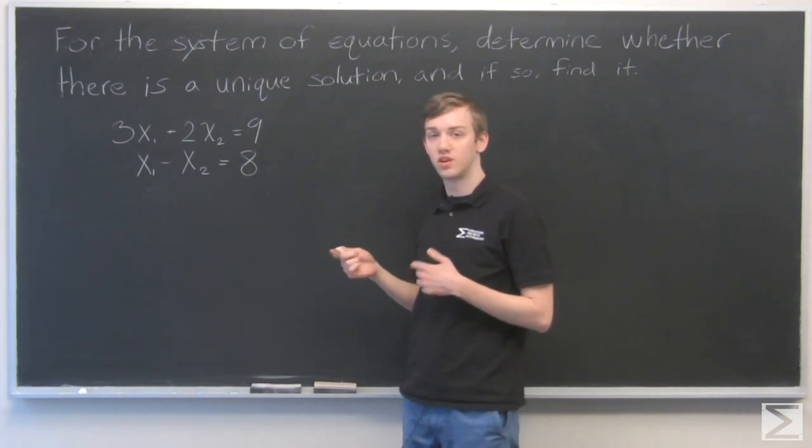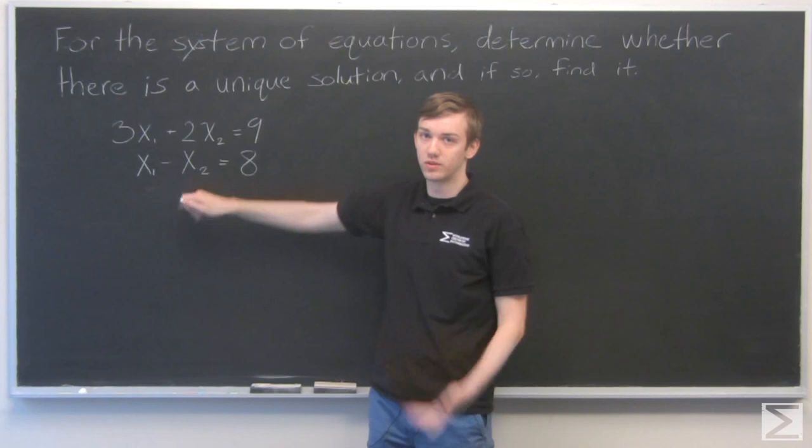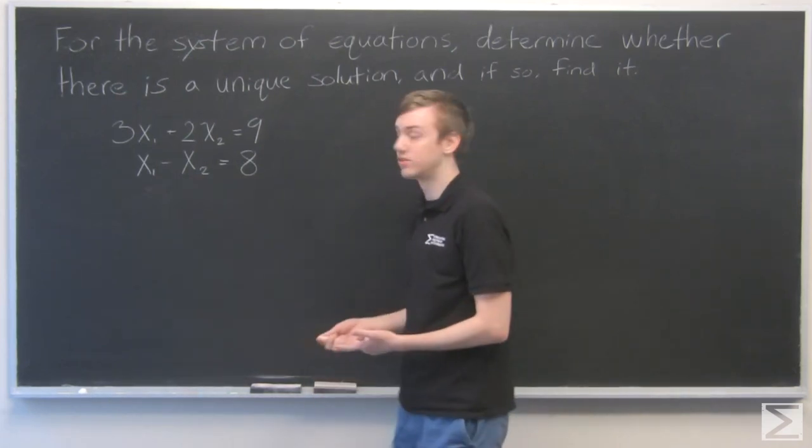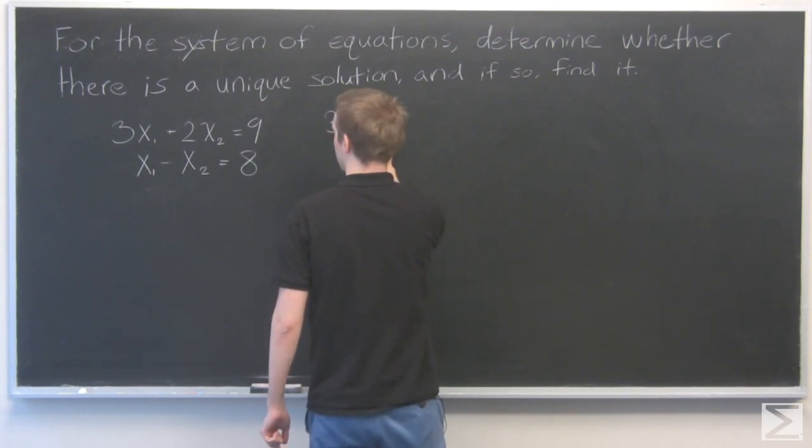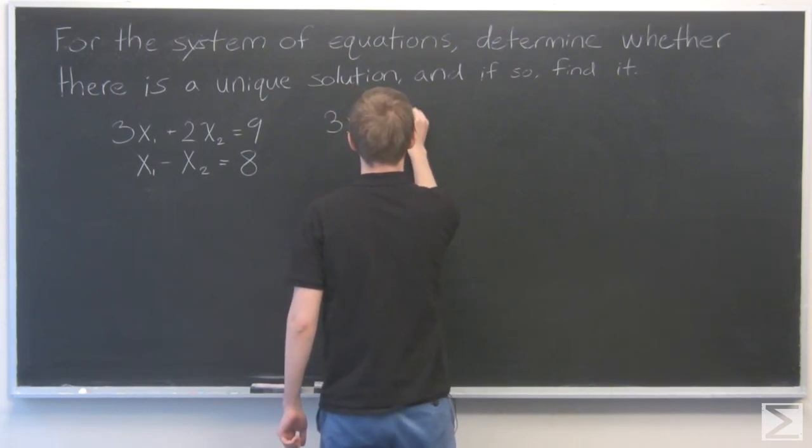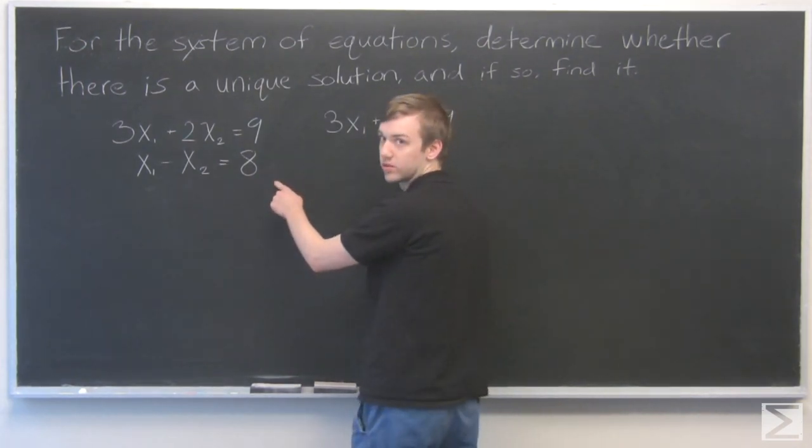So I can take the second equation and multiply it by 2. That way, the 2x2 will have a 2x2 in the bottom as well. And then we can add these two equations together. So I'm going to rewrite equation 1 and multiply this whole equation by 2.